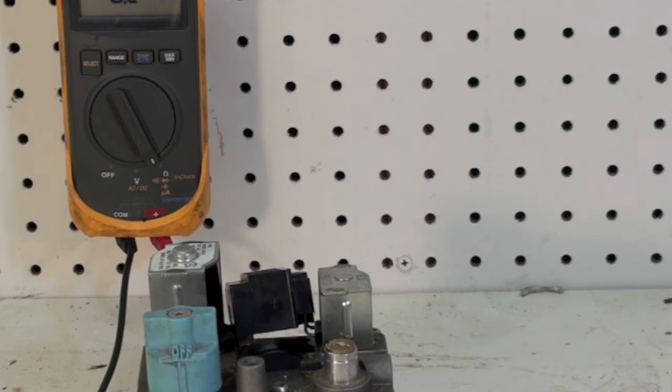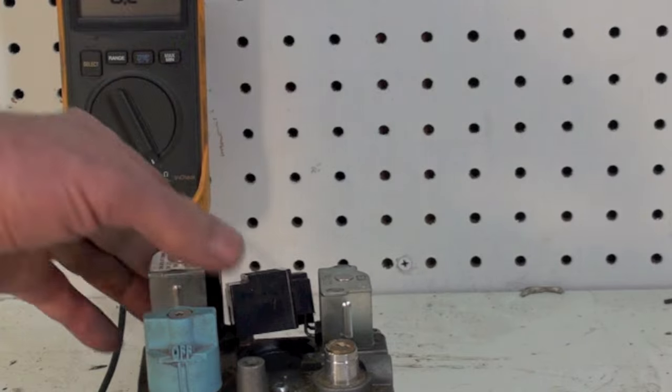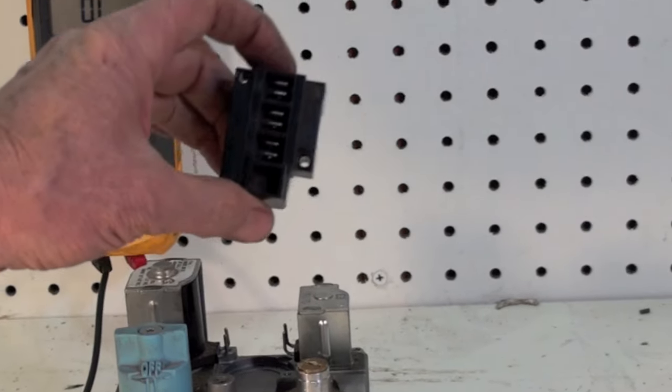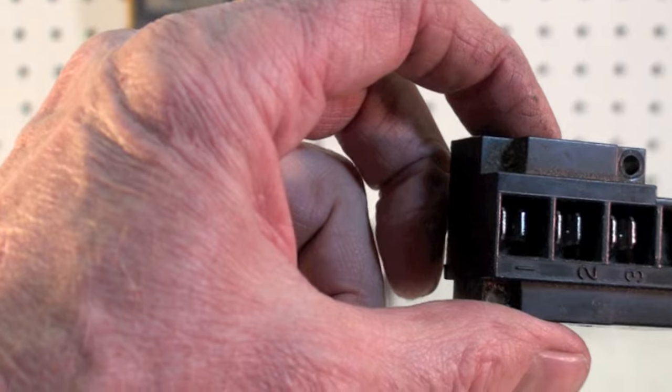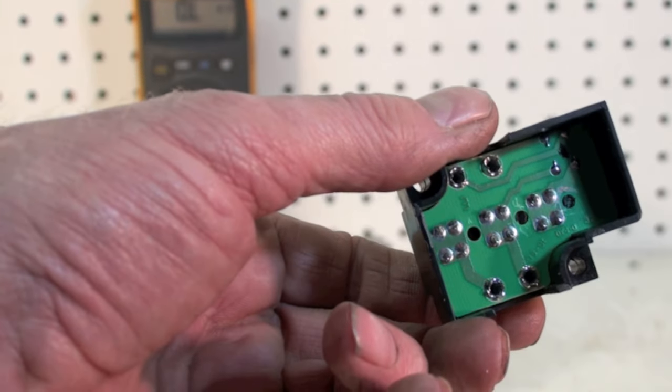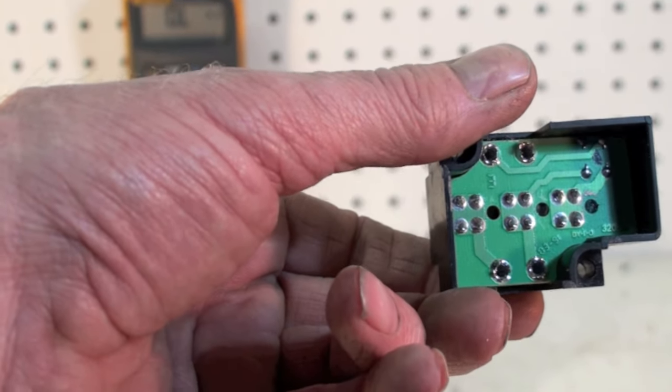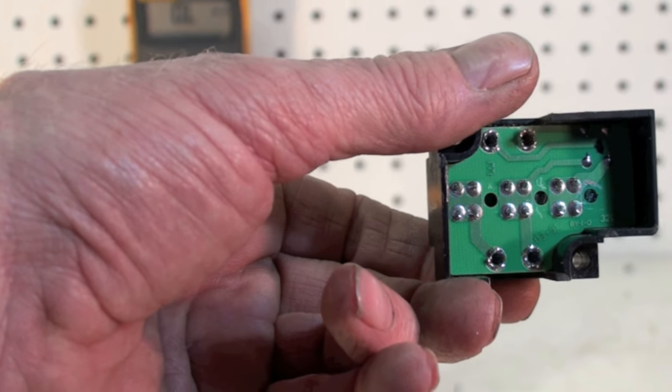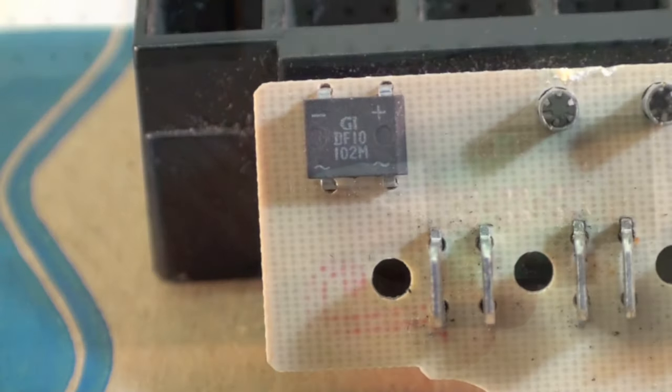Here's one of the White Rogers valves and I've actually taken this part off the top. From this side it looks pretty normal but from this side we've got a little circuit board in there and I'm going to take that circuit board out and we'll see what's in it.